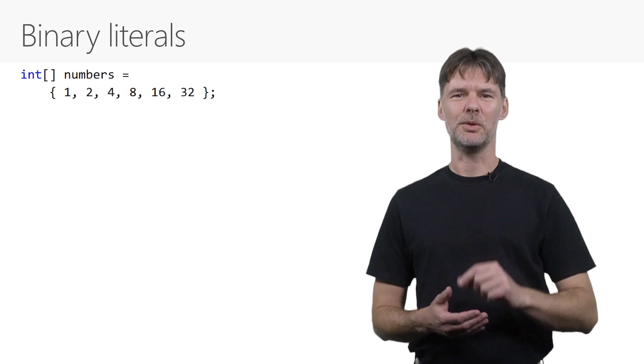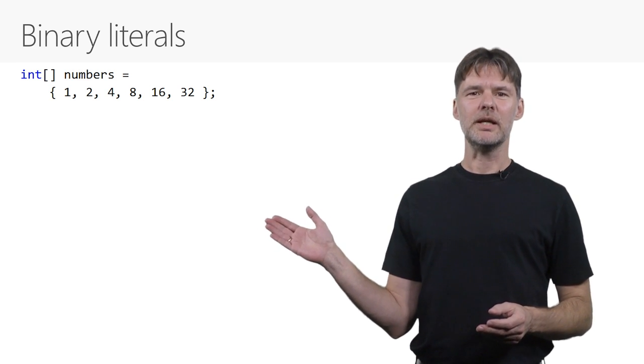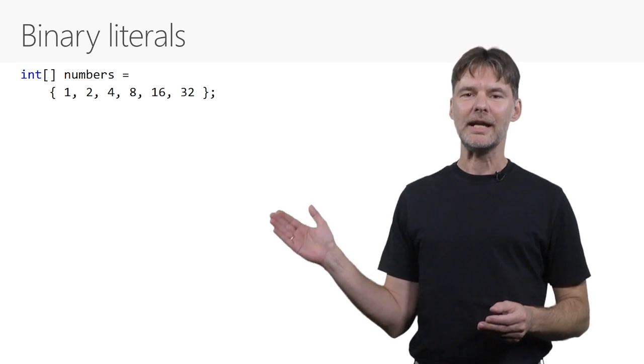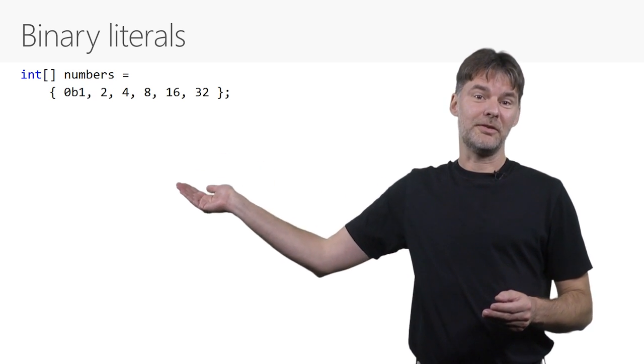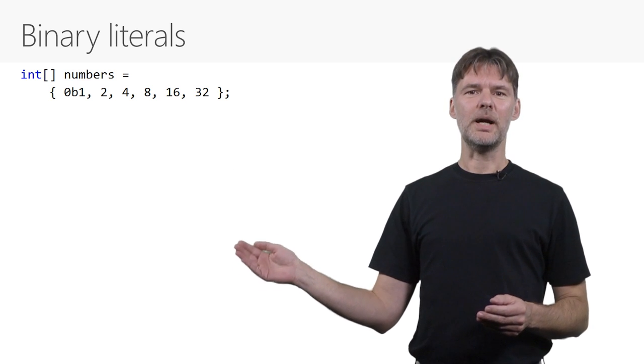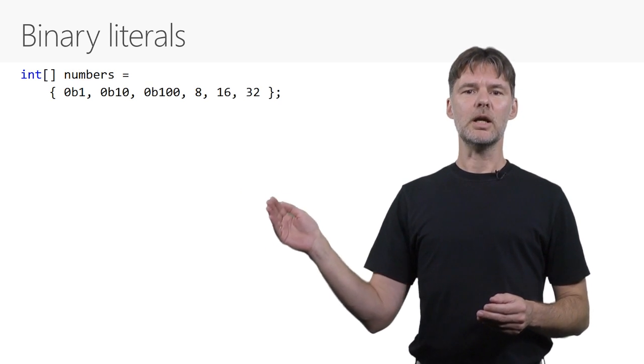Let's start small. Here are some numbers. Just like we let you write numeric literals in decimal or hexadecimal notation, we now have binary literals. They look like this: 0b followed by the ones and zeros that make up your binary number.